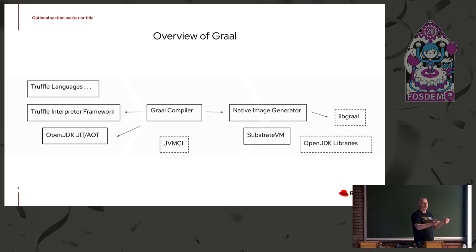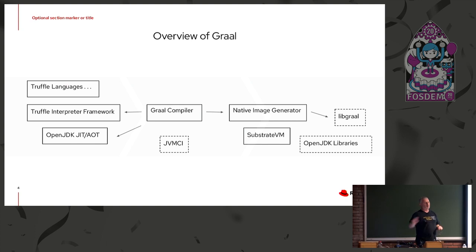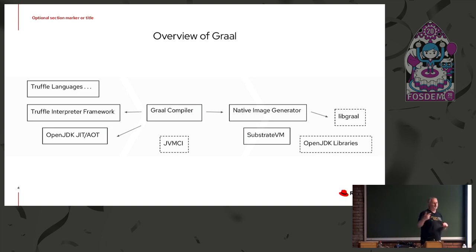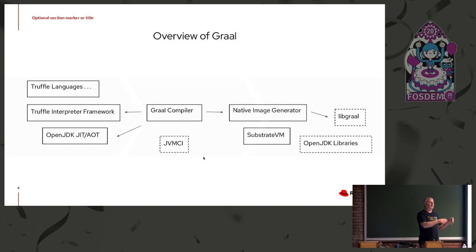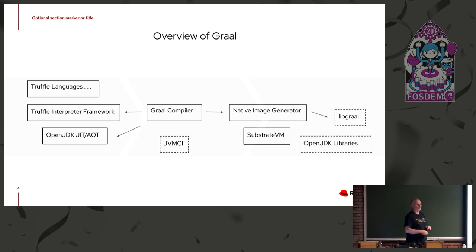In order to do that, it has a front end which parses bytecode and generates a graph structure. There's the usual high, middle, and low tiers that massage that graph into a shape that you can spit code out, and a back end that generates code buffers - compiled methods. A slightly different configuration of the compiler, with a very different back end for linking in a different way, can be used in ahead-of-time compilation for Java, populating the class data sharing segment with predefined methods.